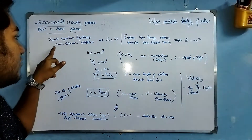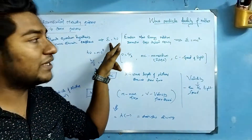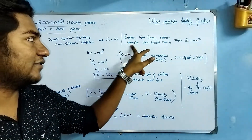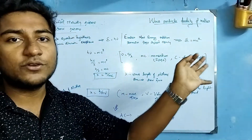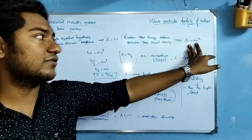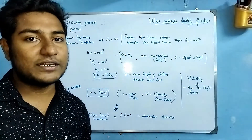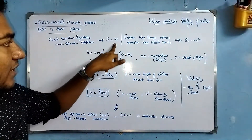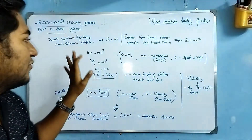Let's look at the Planck quantum hypothesis. Let's say E is equal to h times nu. That is Einstein's mass-energy relationship. We already know Einstein's equation for a material body — E is equal to mc squared. Then we will put E equal to mc squared. So we have two equations. The two equations are the same. Let's say E is equal to h times nu. So h times nu is equal to mc squared, because in E we substitute mc squared.